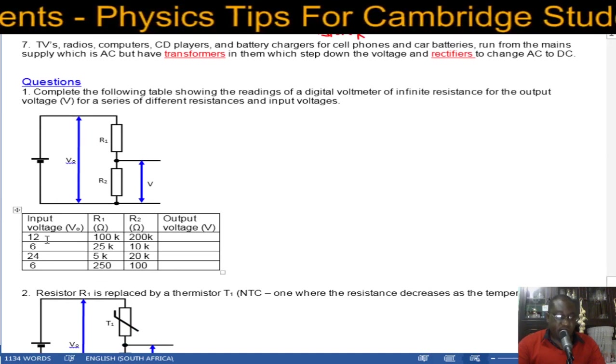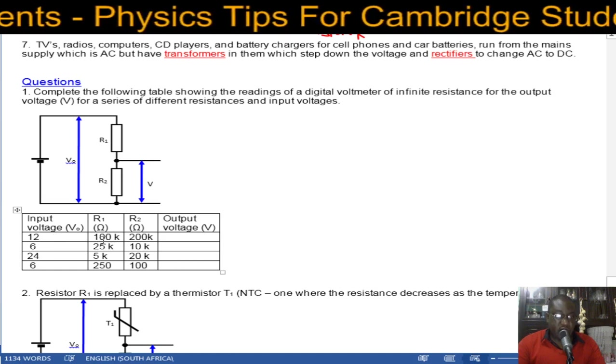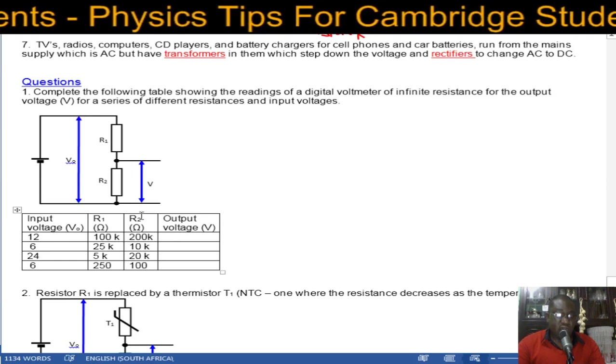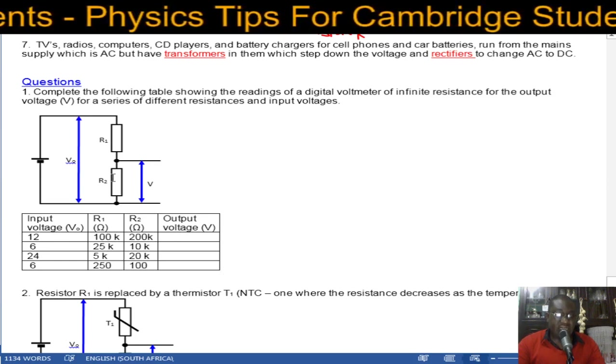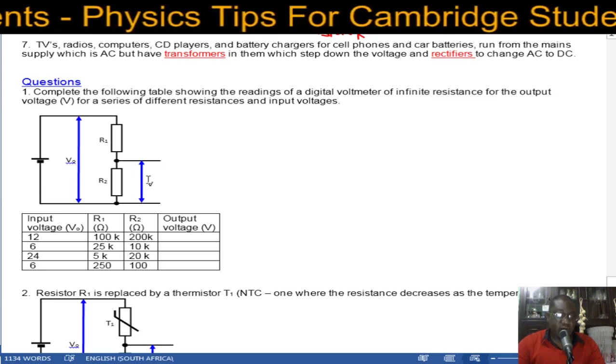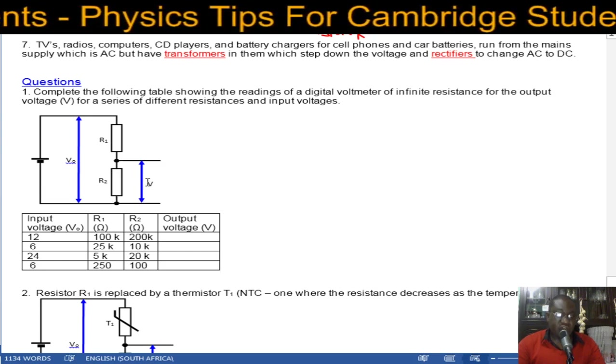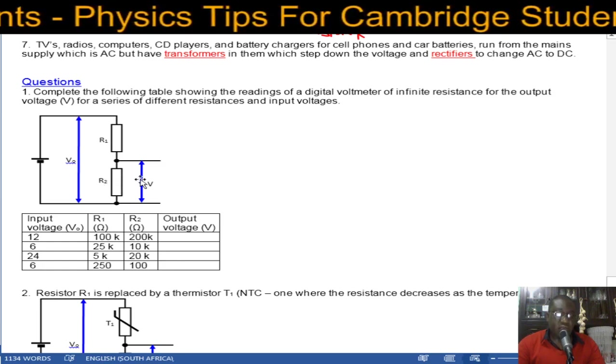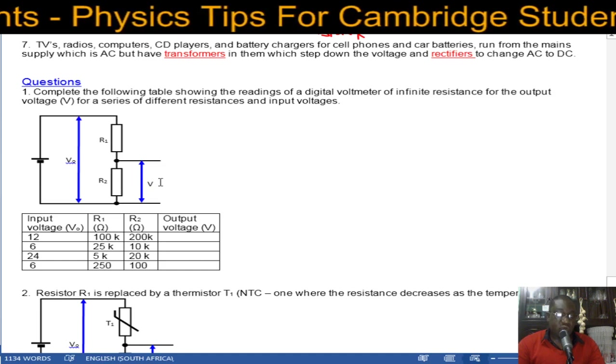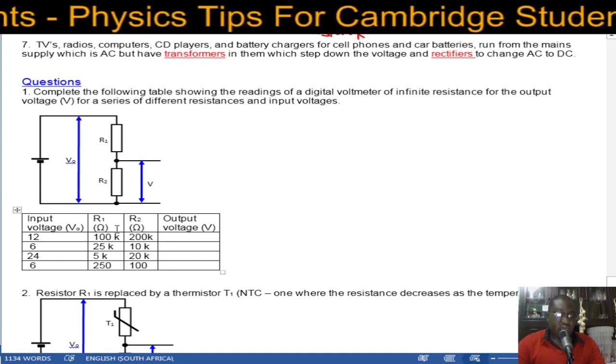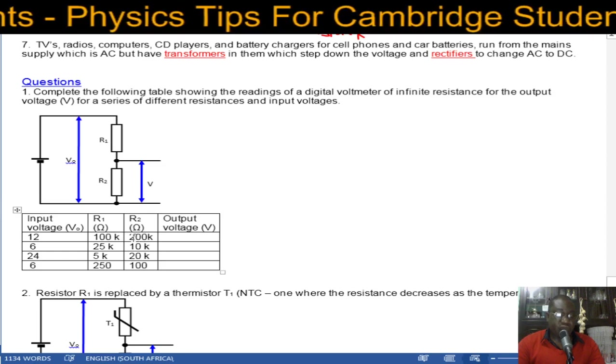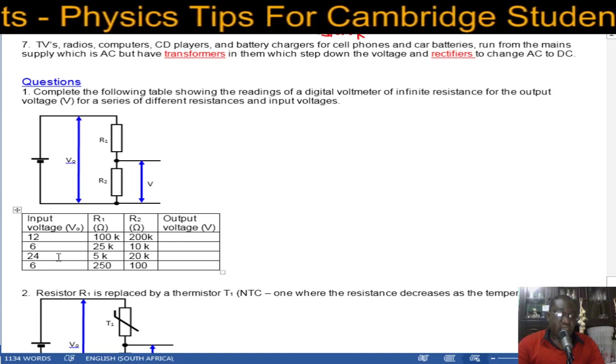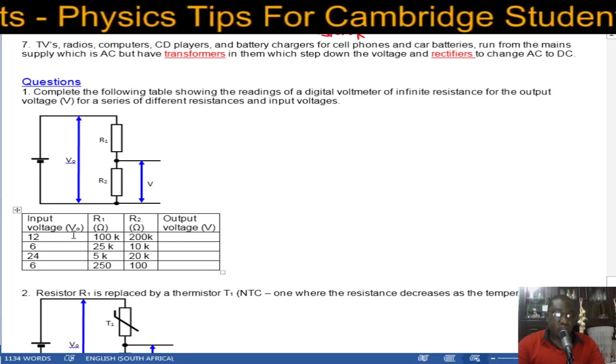If you have an input voltage of 12, R1 is 100k, R2 is 200k. What is the output voltage? First of all you look at which resistor has been connected to give you the output. In order for you to get a high output, the value of this resistor will be large. In this case R2 is greater than R1. So we have R2 over R1 plus R2 times the input voltage. So it will be 200 over 300 times 12, which is two-thirds of 12.